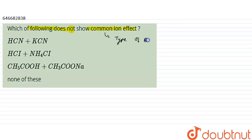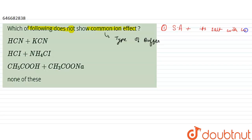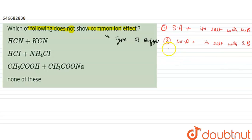There are two conditions for buffer formation. The first condition is: there must be a strong acid along with its salt with a weak base. The second condition is: a weak acid plus its salt with a strong base. These are the two conditions which can give the common ion effect.